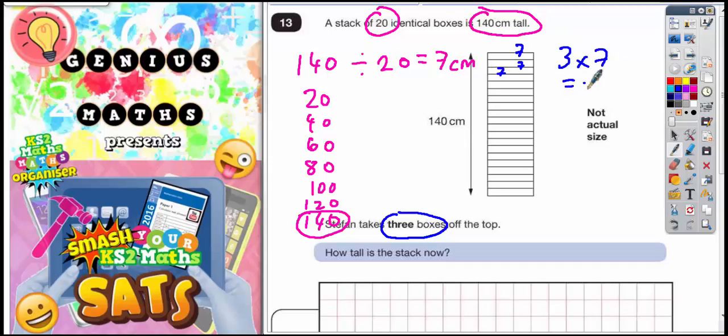3 lots of 7 is 21cm. So we're actually taking off 21cm from the total of the stack. Now it did say to us that the stack was 140cm tall.